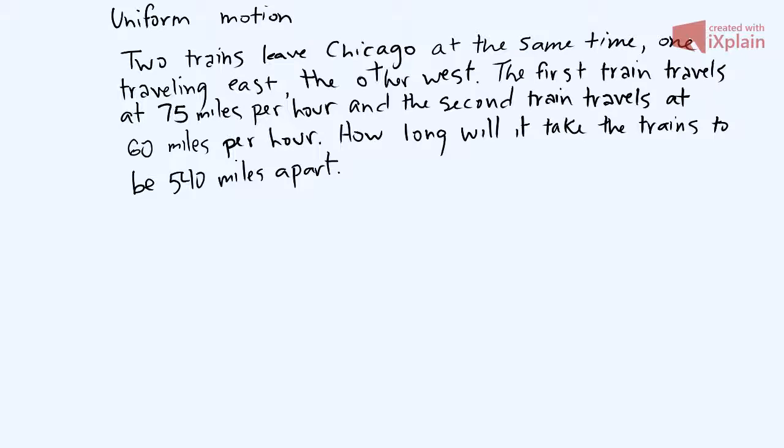Alright, so it's always good to start by drawing a picture. So we have Chicago. We have one train traveling east, the other train traveling west.